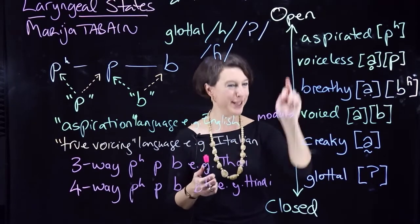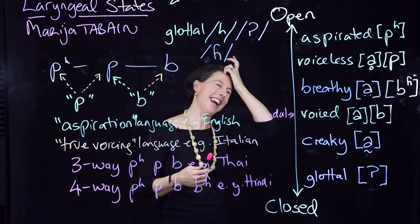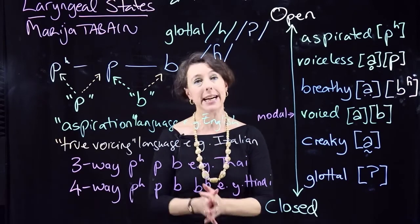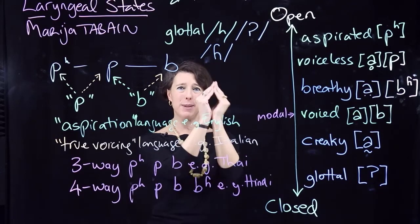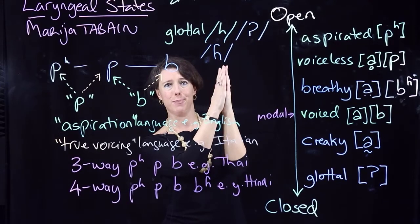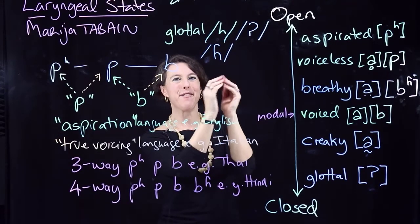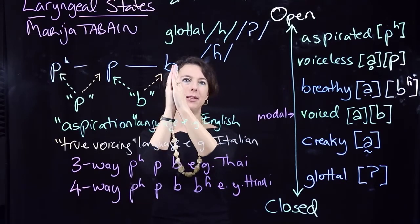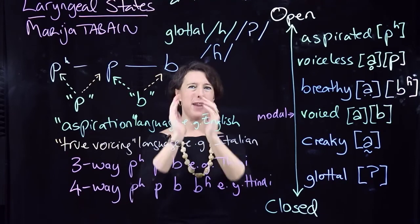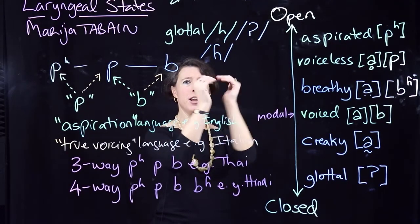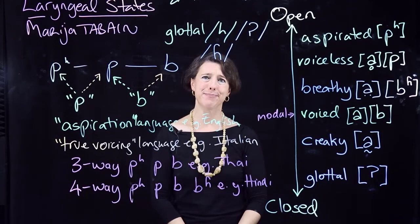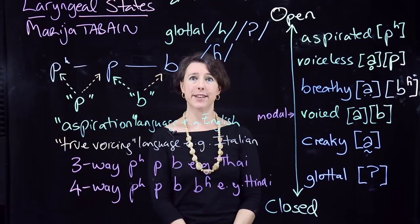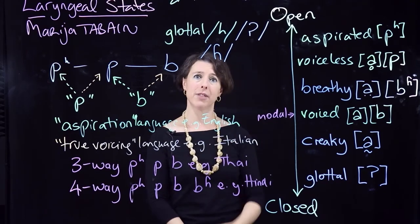In terms of notation: breathy voiced and creaky are used on sonorants — vowels, nasals, and laterals. For obstruents, especially stops, we have aspirated, voiceless, regular voiced, and breathy voiced. Vocal fold vibration is quite complex from a speech pathology point of view — if you look at the vocal folds from different angles they're doing all sorts of motions simultaneously. But that's a basic overview of the laryngeal states that feed into everything above the larynx.